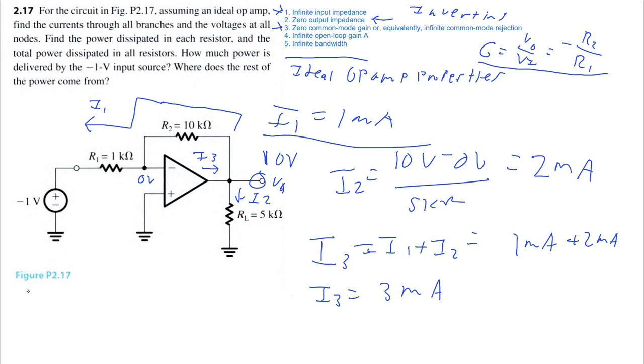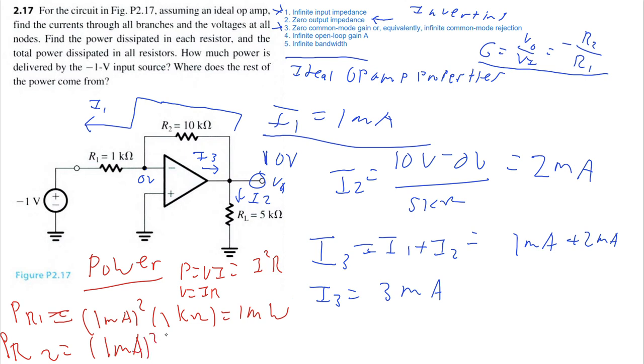Now let's move on to some power calculations. We want to find the power dissipated in each resistor. So the power dissipated by R1, we know that power is equal to VI. And since V is equal to IR, we can say that this is equal to I squared R. So the power dissipated by R1 is equal to 1 milliamp squared multiplied by the resistance of 1 kilo ohm. So that should be a milliwatt. And my power dissipated by R2, once again, that's 1 milliamp squared times 10 kilo ohms. This should be 10 milliwatts.